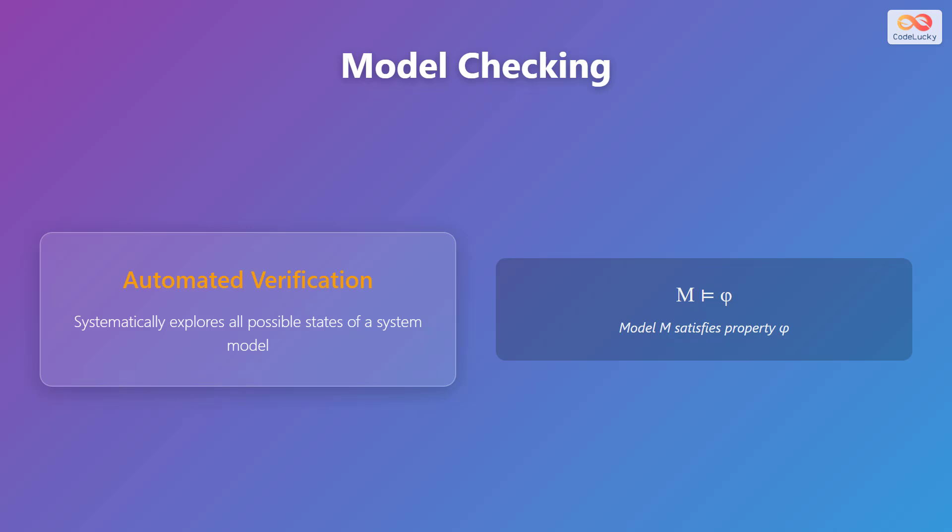Model checking is an automated verification technique. It systematically explores all possible states of a system model to ensure it meets specified properties. This can be represented by the formula M satisfies property phi, meaning that model M satisfies property phi.